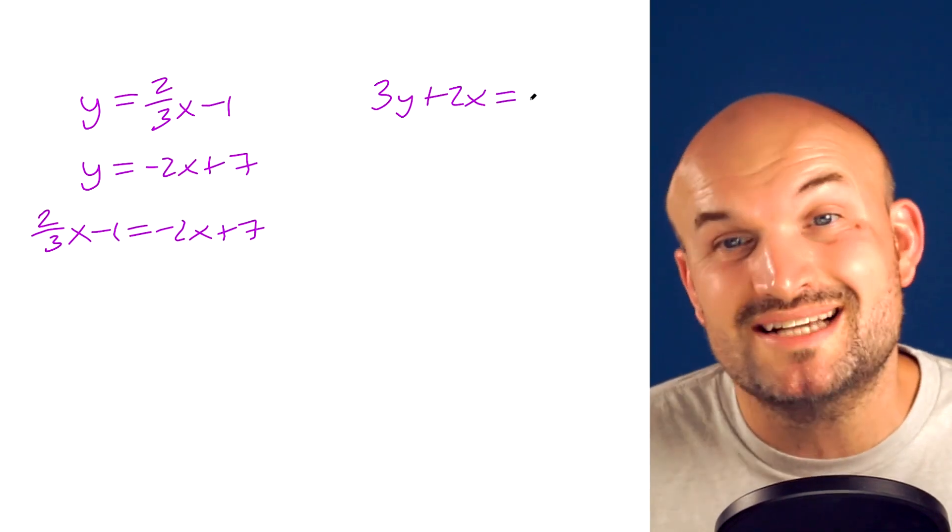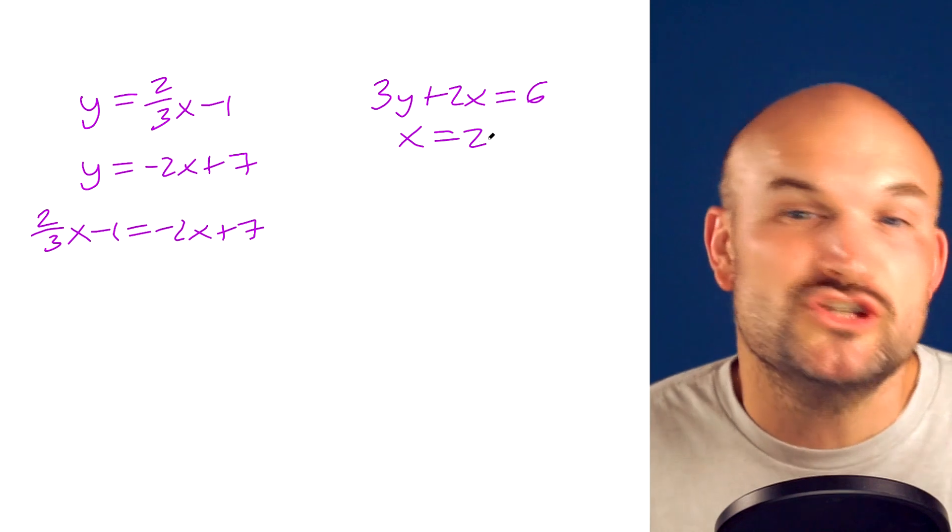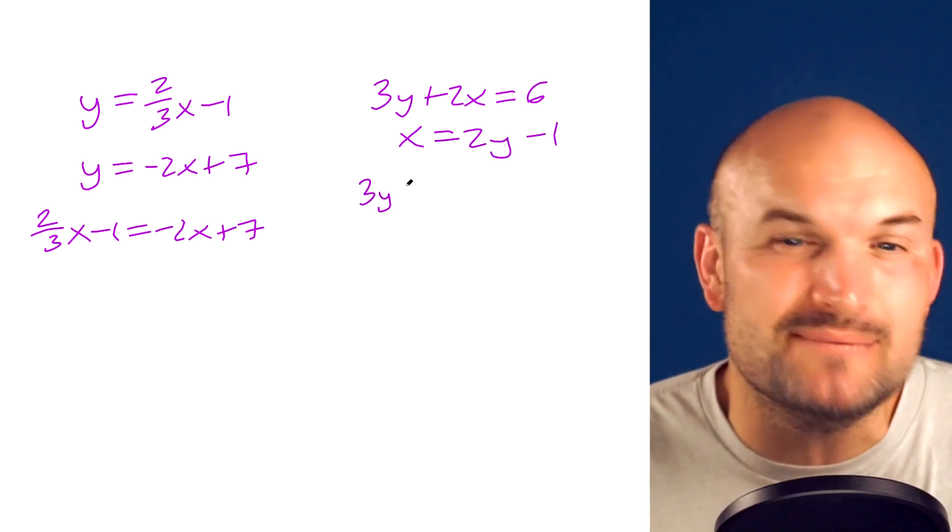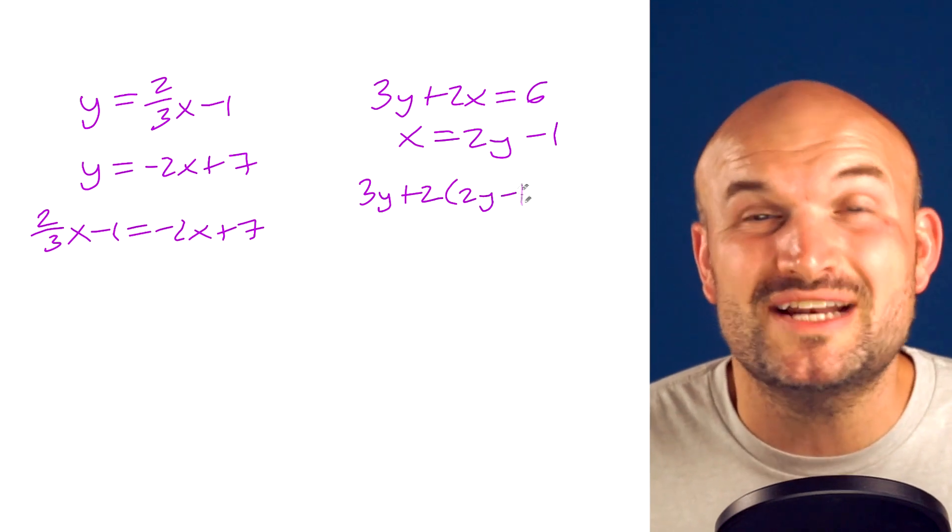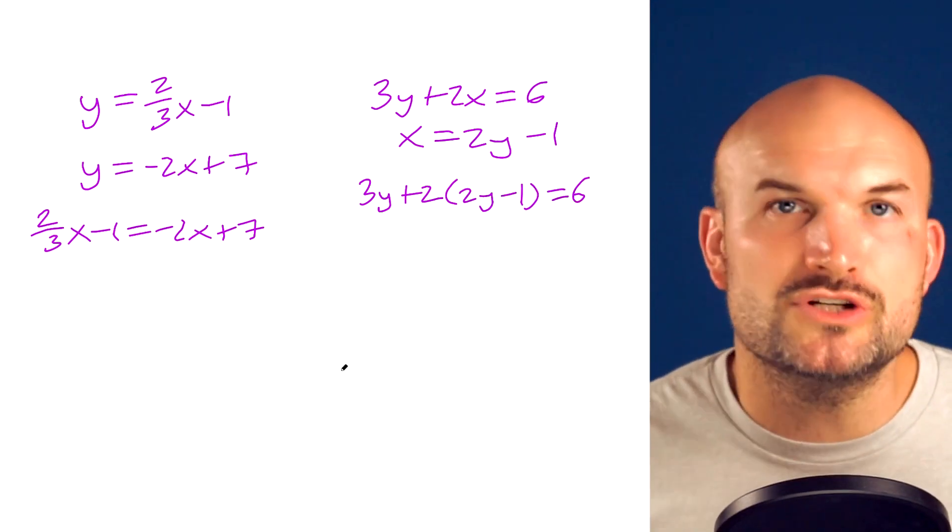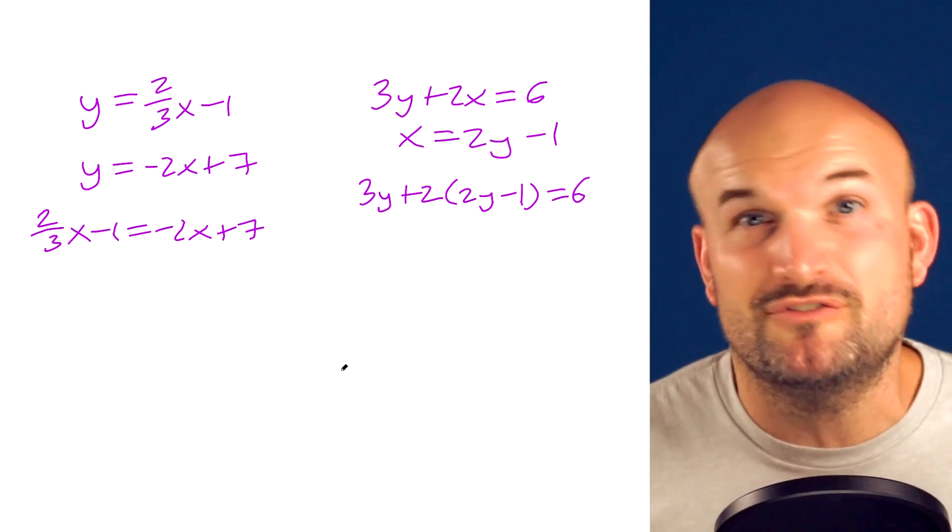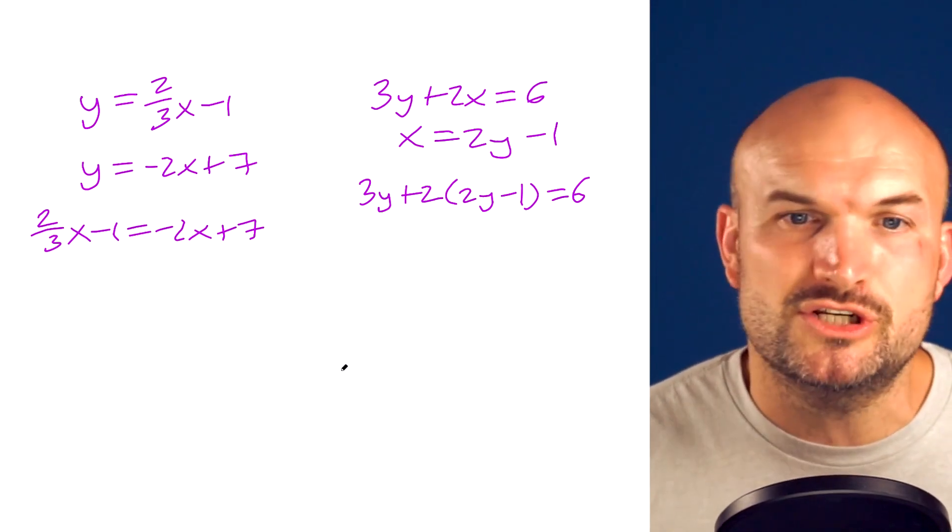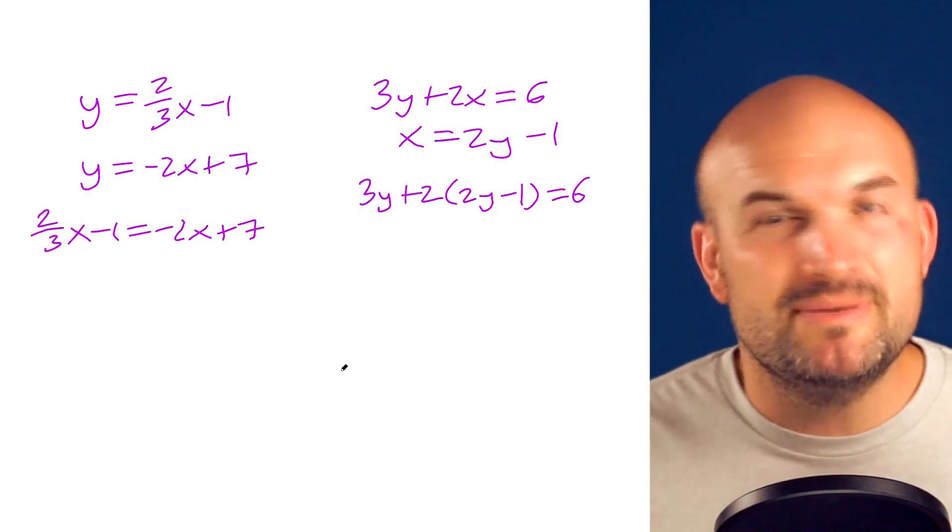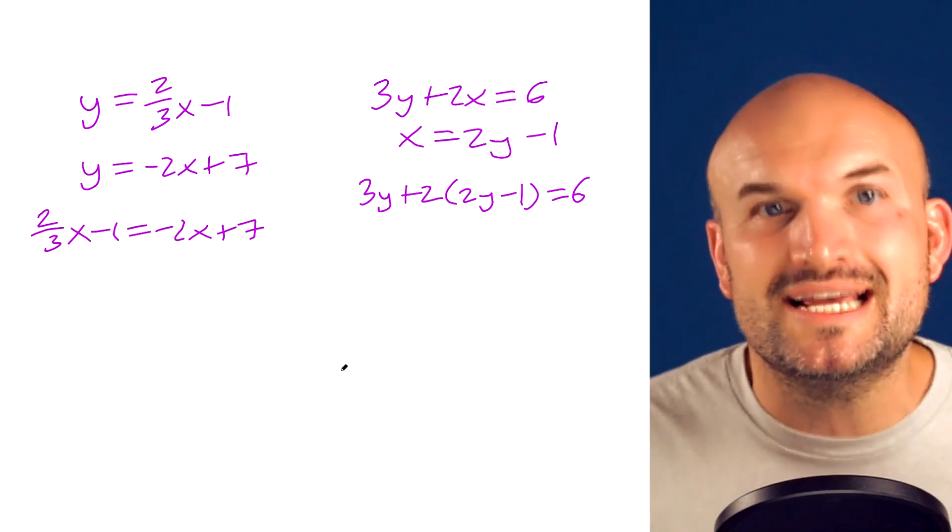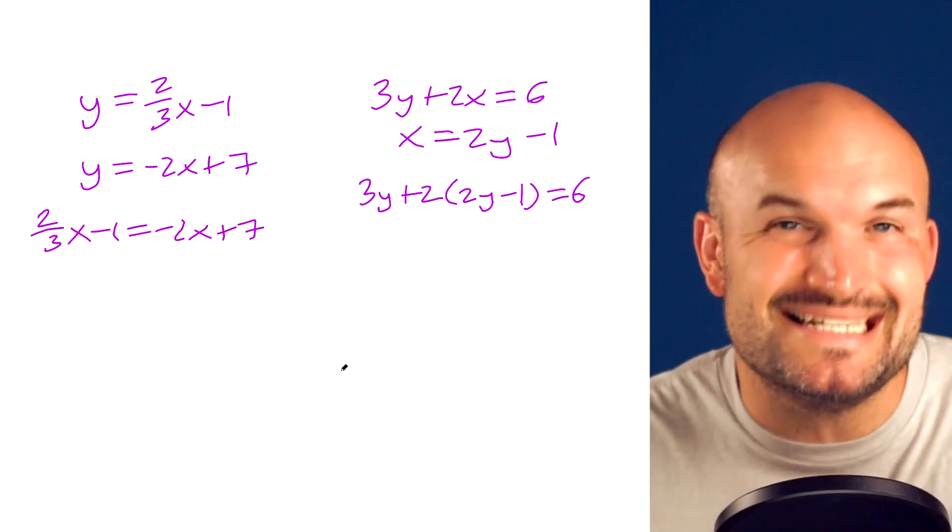In this example, where I have three Y plus two X equals six, as well as X equals two Y minus one, again, you can see that X is solved by itself. So all I simply need to do is plug into the other equation and solve for Y. Why is substitution so important for these two cases? Well, you could use elimination and substitution for any problem, but I really like using substitution when the variable is already isolated because there's less work. All you simply need to do is take the expression that your variable is equal to and plug it into the other equation. It makes things easy.